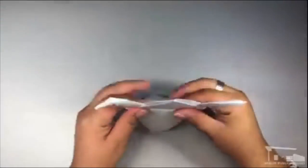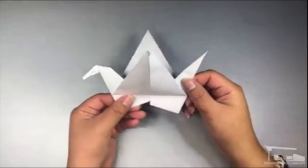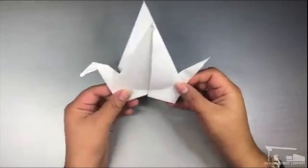Pull down the middle points into two wings and you have a crane! If you pinch the front half of the bird and tug the tail gently, you can make it flap its wings.